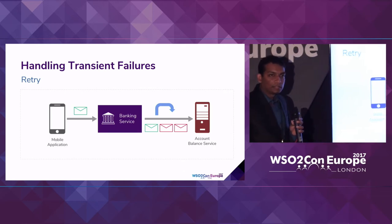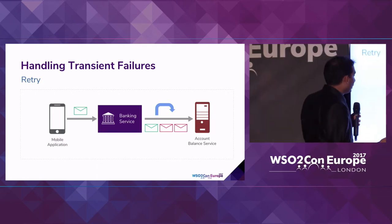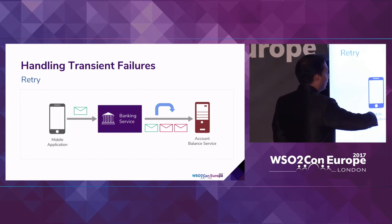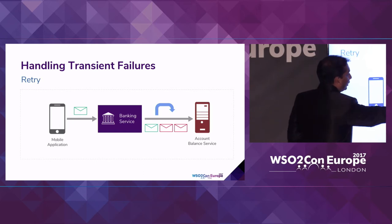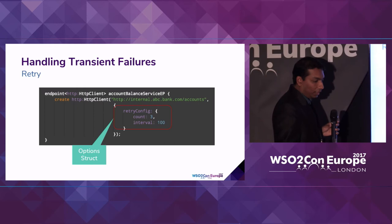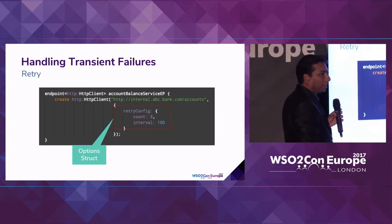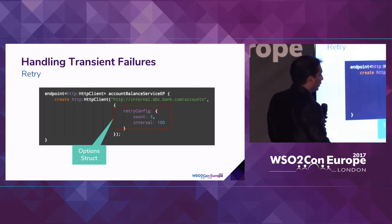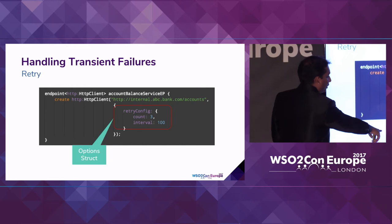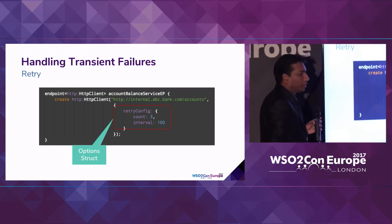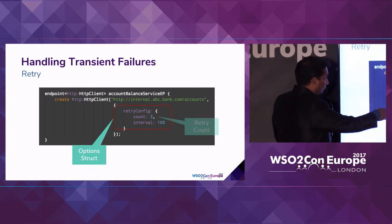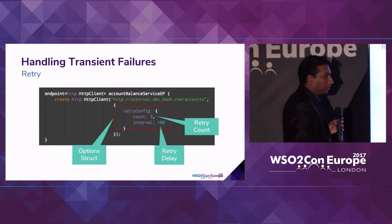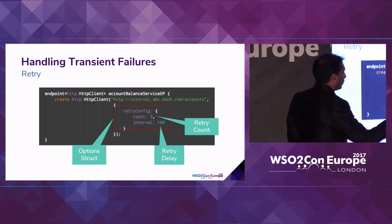Let's see how we can handle transient failures using the retry pattern. Here we configure the Ballerina endpoint with retry configuration. Within the HTTP client, using the option struct we define the retry config — setting the retry count to three with a duration of 100 milliseconds. This is a simple configuration at the endpoint level.